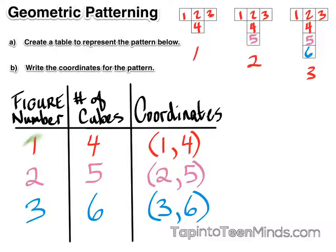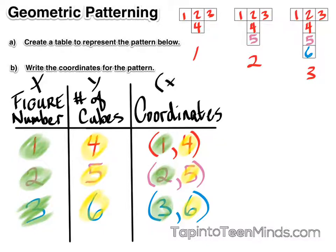Now it should be noted that our figure numbers are noted and come first in our coordinates. Our number of cubes are second. We typically call the first value the x variable, and the y is the number of cubes, our second variable.